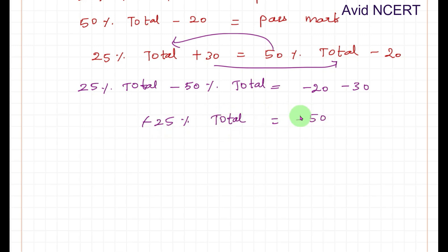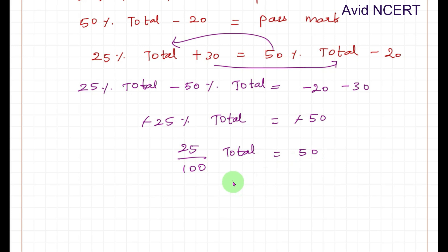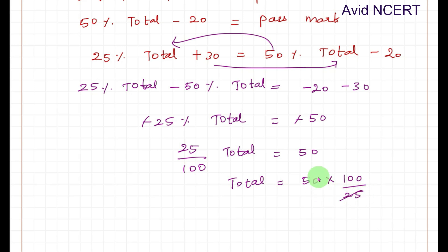This simplifies to minus 25 percent of total equals minus 50. Cancelling the negatives gives 25/100 of total equals 50, so total marks equals 50 times 100 divided by 25, which is 200. Total marks equals 200.